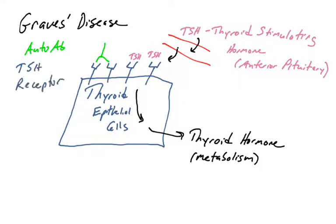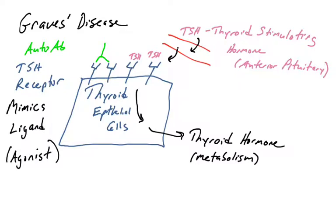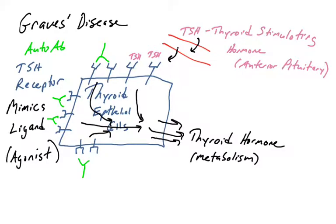In individuals who suffer from Graves' disease, those individuals make an autoantibody which binds to the TSH receptor. A B cell undergoes VDJ recombination and junctional diversity such that its antigen binding site binds the TSH receptor. In this instance, the autoantibody mimics the ligand — the antibody acts as an agonist, mimicking the action of TSH. So the antibody binds TSH receptors on thyroid cells and signals into the cell, just like TSH.